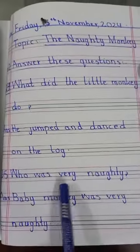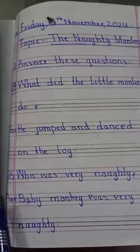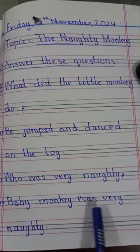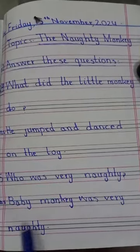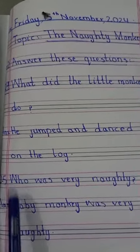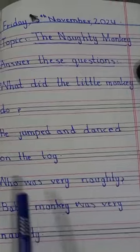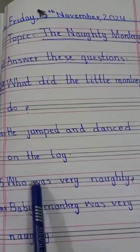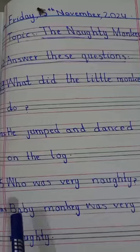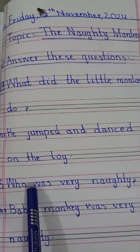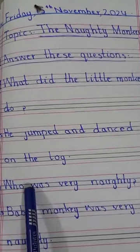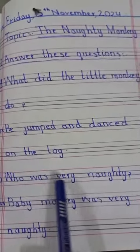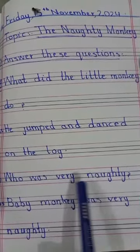Question number 5: Who was very naughty? Baby monkey was very naughty. You will have to write the answer starting with 'baby monkey'. Half the answer is in the question. You can see — after writing 'baby monkey', you will start the answer: baby monkey was very naughty.